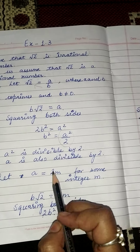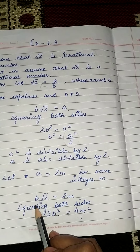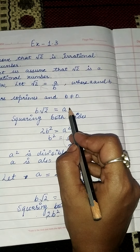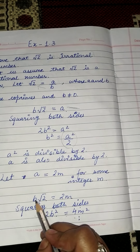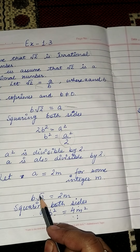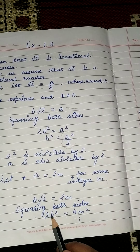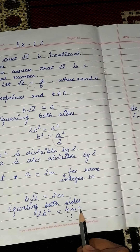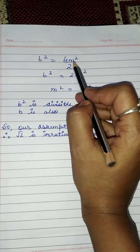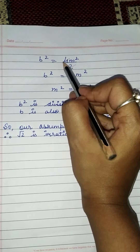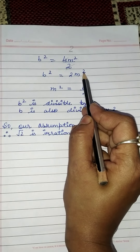Now let a equal to 2m for some integer m. We substitute a with b under root 2 and square both sides again. This gives us 2b square equals 4m square. Simplifying, b square equals 4m square upon 2, which becomes 2m square. So b square equals 2m square.